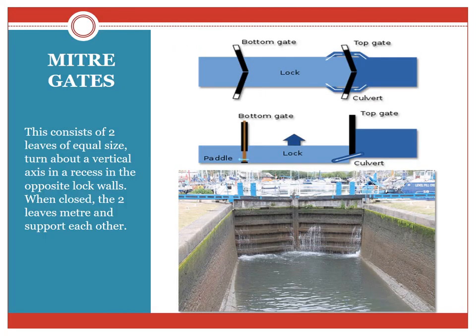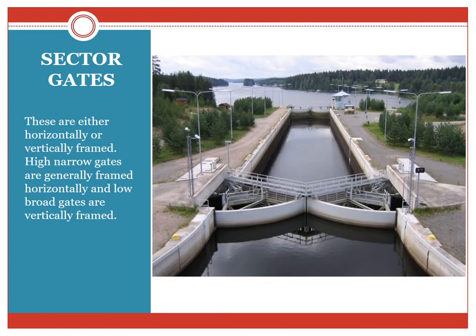Mitre gates: as you can see in this figure, it consists of two leaves of equal size that turn about a vertical axis in recesses in the opposite lock walls. When closed, the two leaves of the mitre gate support each other. Moving across to the sector gates: these are either horizontally or vertically framed. High narrow gates are generally framed horizontally and low broad gates are vertically framed. In the latter case, the gates are mounted on a vertical trunnion. Closure of the lock chamber is accomplished by two gates mounted in opposition so that they abut when closed.